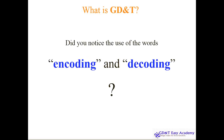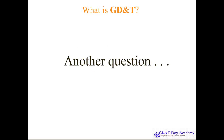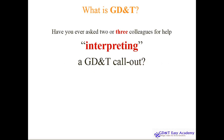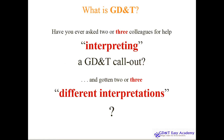A question to you all: did you notice the use of the word encoding and decoding? Another question — have you ever shown a GD&T callout to two or three different colleagues inside your design, manufacturing, or inspection team and got two or three different interpretations? How can that be? Three different people interpret it in three different ways — that is the misunderstanding, and that is the way GD&T is being used incorrectly.